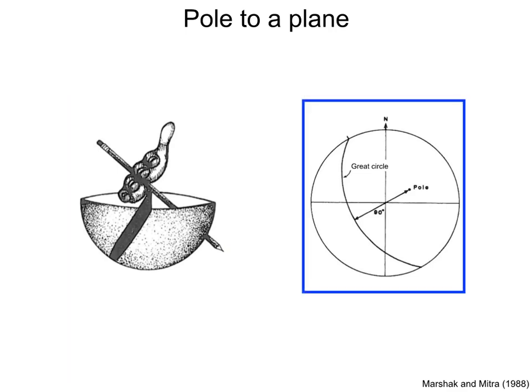The pole to a plane is a line, and it will plot on the stereonet as a dot. The angle between the pole and the plane, measured along the dip direction, is 90 degrees.